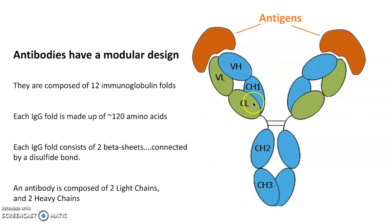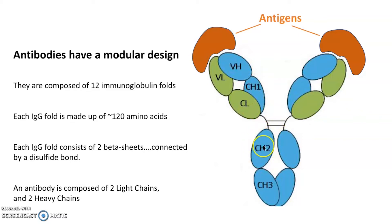VL stands for the variable region of a light chain, and this is the constant region of a light chain. Similarly, the heavy chain has a variable domain out here on the tips where it's going to bind the antigen. Then it has a constant one, a second constant region, and a third constant domain. You'll read about variable and constant domains of these chains.